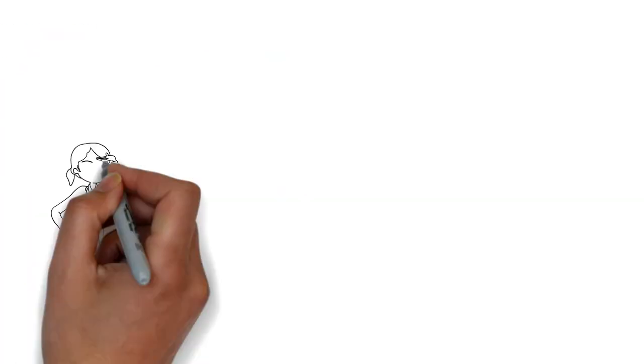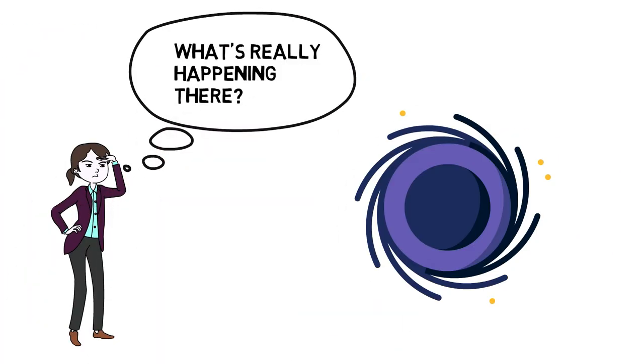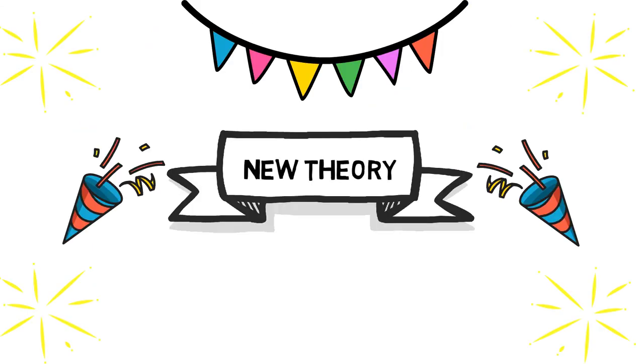This means that we will not know exactly what is going on in a black hole until scientists can successfully create a new theory that accurately describes small sizes and strong gravitational effects at the same time. Whatever the new theory ends up telling us, it will most certainly not say that there are singularities in black holes.